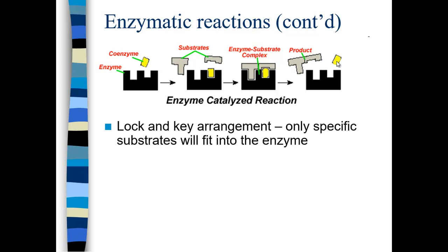There's what is called the lock-and-key arrangement, which describes that only specific substrates will fit with specific enzymes. An enzyme that acts on glucose will not be the same enzyme that acts on something like sucrose because their configurations are different, and enzymes are highly specific to their substrates.